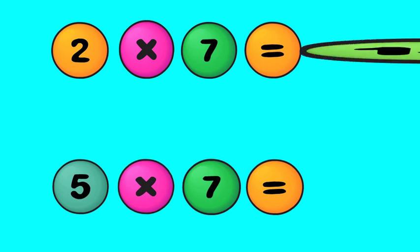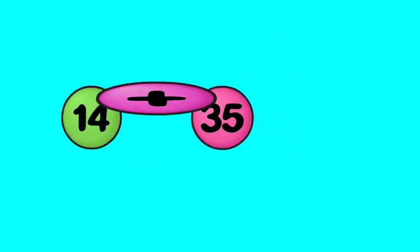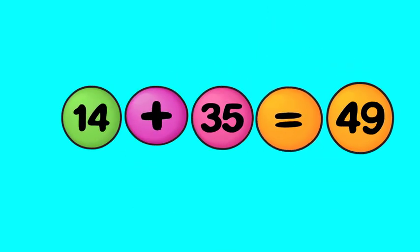2 times 7 is 14. 5 times 7 is 35. Put the parts together again. 14 and 35 is 49.